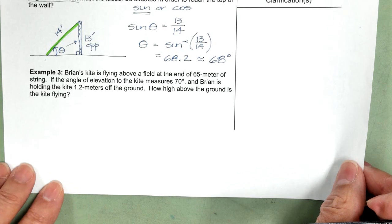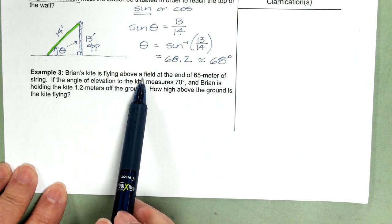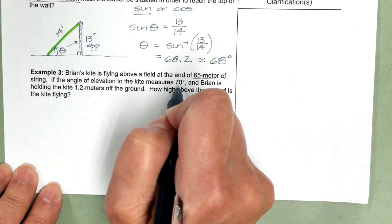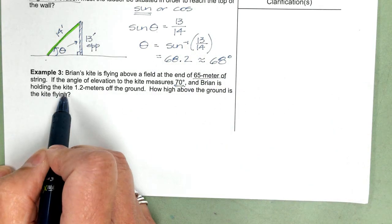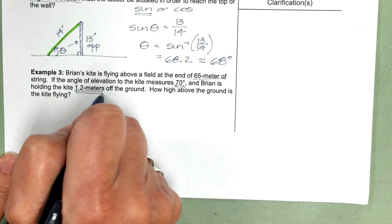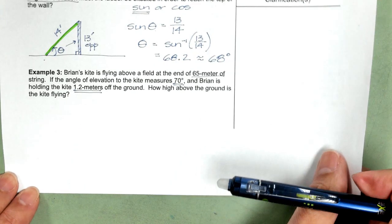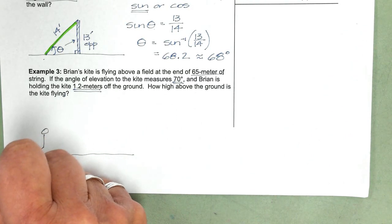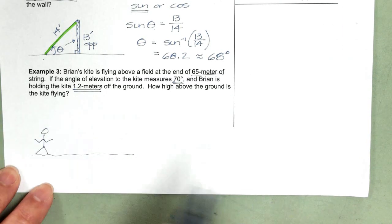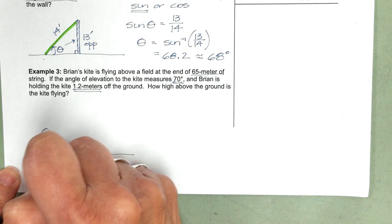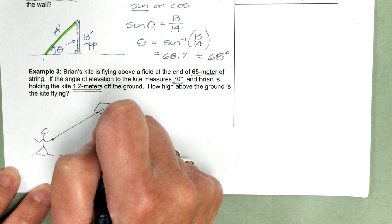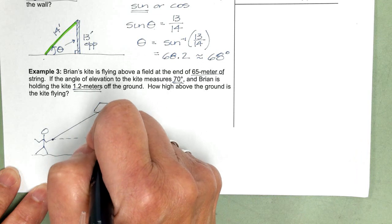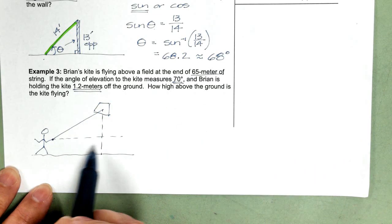Example 3. It's a little more complicated, but it's still doable. Brian's kite is flying above a field at the end of a 65-meter length of string. Angle of elevation to the kite measures 70 degrees. Brian is holding the kite 1.2 meters off the ground. How high above the ground is the kite flying? So here's the ground. Here's Brian. He's holding the string of the kite. And so we can create a right triangle.